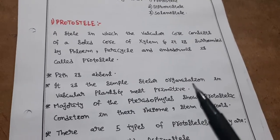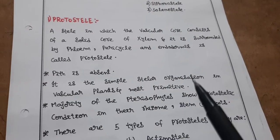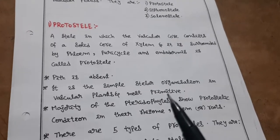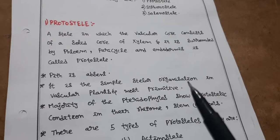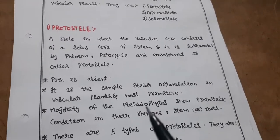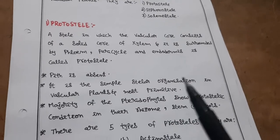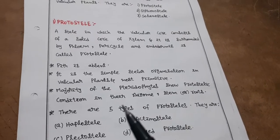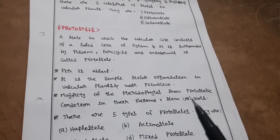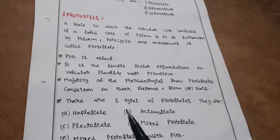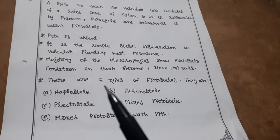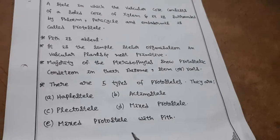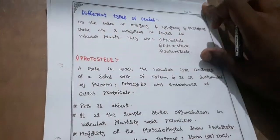Protostele is the simplest and most primitive stelar organization in vascular plants. The majority of pteridophytes show protosteelic condition in their rhizome, stem, or roots. There are five types of protosteles: haplostele, actinostele, plectostele, mixed protostele, and mixed protostele with pith.